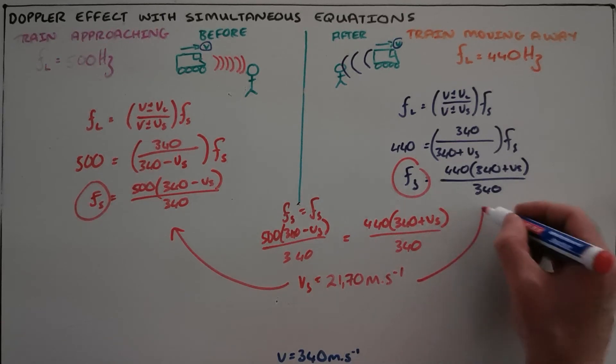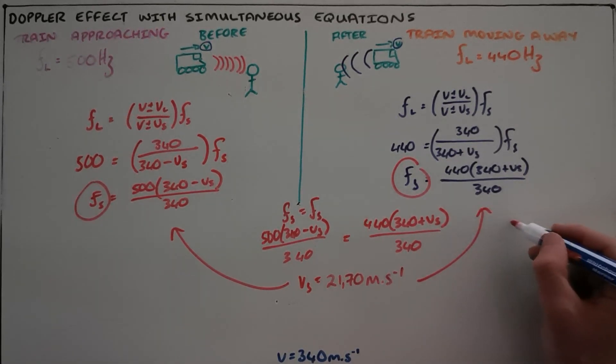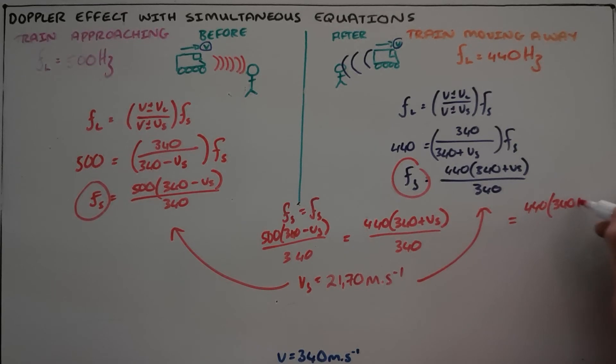To find the correct frequency for that source. We find that the correct frequency for that source is 440 multiplied by (340 + 21.7) divided by 340.